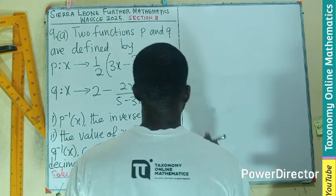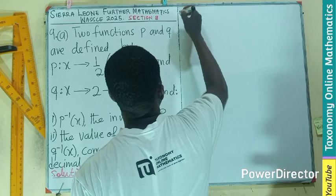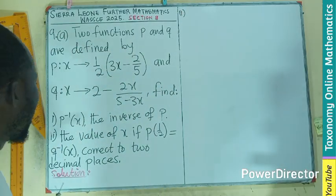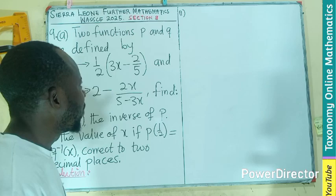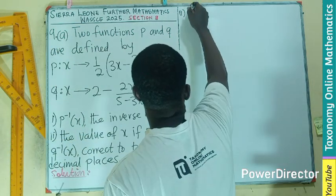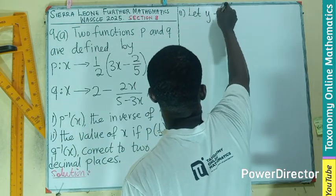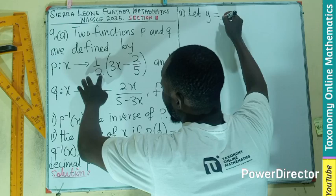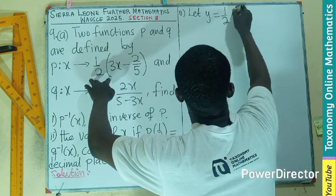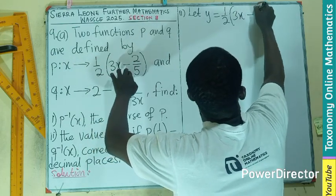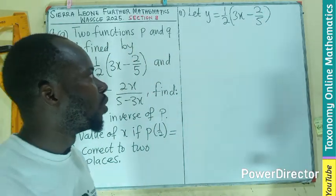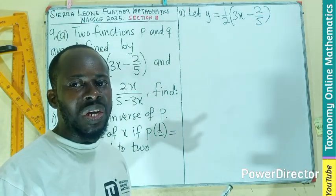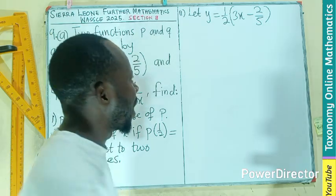Let's start with the first part, the Roman number one. In order to find the inverse, we need to get the dependent variable Y into this equation. So we are going to let Y equals to that of P which is one-half times three X minus two-fifths. So that's the first thing we need to do. After doing this, we interchange the position of X and Y.